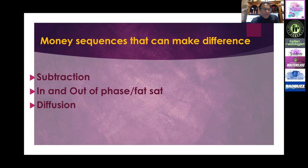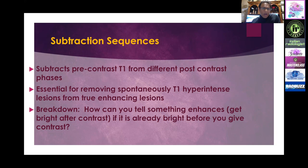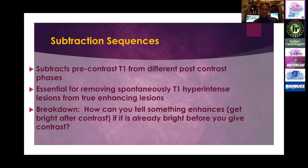The sequences that can really make a difference in diagnosing renal and liver lesions are subtraction, in and out of phase, and fat sat. Remember that for renal tumors, fat is your friend, as are diffusion-weighted images. Subtraction is grossly underutilized — it drives me crazy when I see outside scans where subtraction is not done. It's very simple: you just push a button and the machine does it for you. There is no extra table time or patient time. Essentially, you are subtracting pre-contrast images from post-contrast images, which subtracts out hemorrhage and hyperintensity within the lesion and gives you pure enhancement.